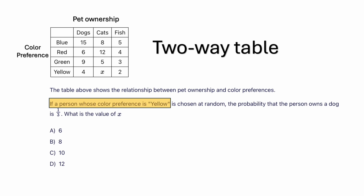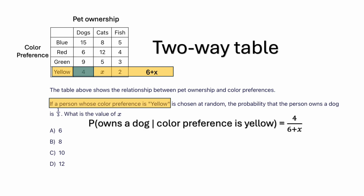With a conditional probability, we only focus on the given condition, which is yellow. We look only at the row with the category yellow. The total number of people whose color preference is yellow is 4 plus x plus 2, which equals 6 plus x. Out of that, the number who own dogs is 4, which is our conditional probability. Writing this using probability notation: P(owns a dog | color preference is yellow) = 4 out of (6 plus x).